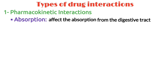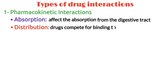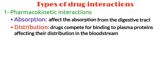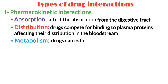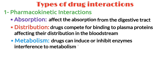Now let us discuss the distribution. Interactions can occur when drugs compete for binding to plasma proteins, affecting their distribution in the bloodstream. If we talk about the metabolism, some drugs can induce or inhibit enzymes responsible for drug metabolism in the liver, leading to altered drug levels.